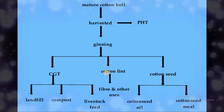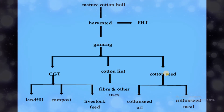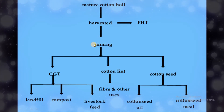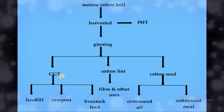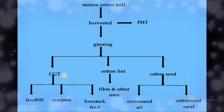From the ginning press, cotton seeds are also obtained after separation of the cotton lint, and may be used for cottonseed oil or cottonseed meal. A third output, CGT, is considered waste and is used for landfill, compost, or livestock feed. This summarizes how cotton is processed.